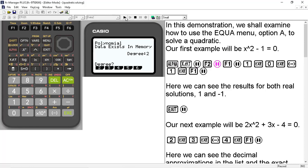And here it says we have a polynomial, data exists in memory, degree 2. What this means is that numbers are typed in. You may see that data does not exist in memory. That simply means that there is no data in the memory. So we're going to select F1 for the degree 2 polynomial, because that's the quadratic.